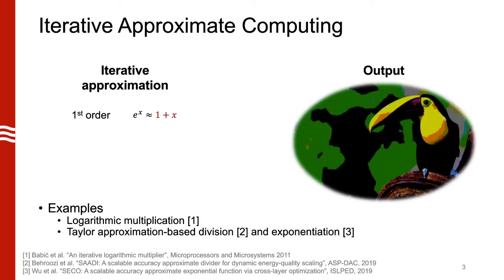One type of approximation we can use to reduce energy consumption is iterative approximate computing. The way this works is that with more iterations or more time, we improve the quality of the approximation. Types of these approximations include logarithmic multipliers or Taylor series approximations for dividers or exponential units. This example looks at how to do this for an exponential unit.